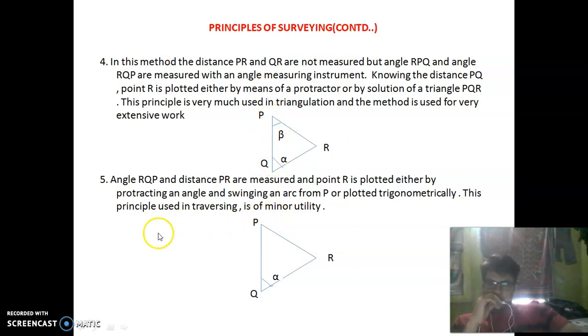Next method: angle RQP and distance PR are measured and point R is plotted either by protecting an angle and swinging an arc from P or plotted trigonometrically. The reference line is PQ and alpha angle is measured.